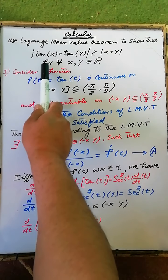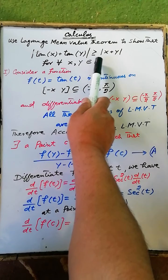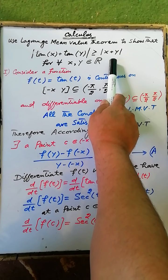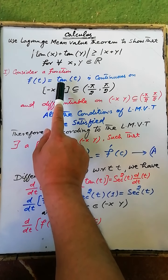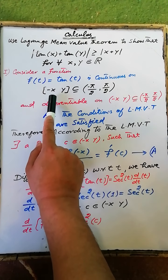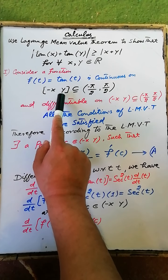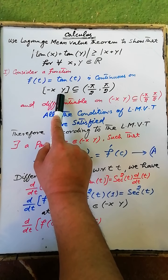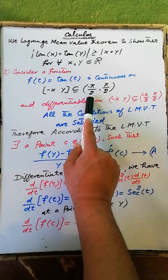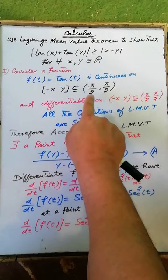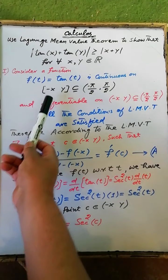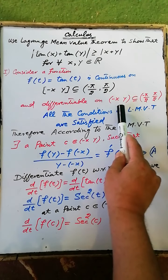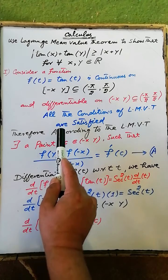Use the Lagrange Mean Value Theorem to show that |tan(x) + tan(y)| ≥ |x + y| for x, y belonging to the real numbers. Consider a function f(t) = tan(t), which is continuous on the closed interval with endpoints -x and y, a subset of the open interval (-π/2, π/2), because tan(t) is continuous on this open interval and is differentiable on the open interval with endpoints -x and y.